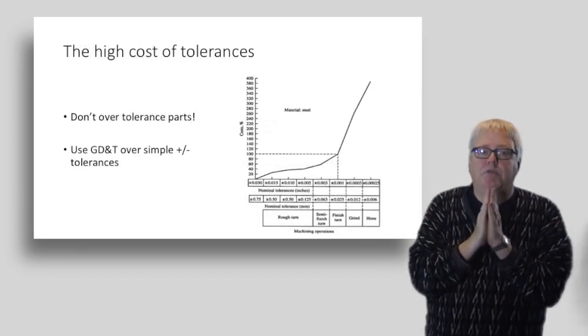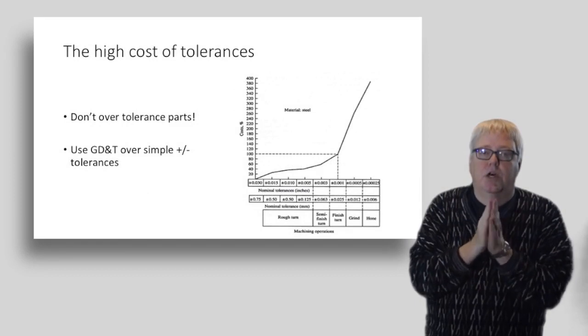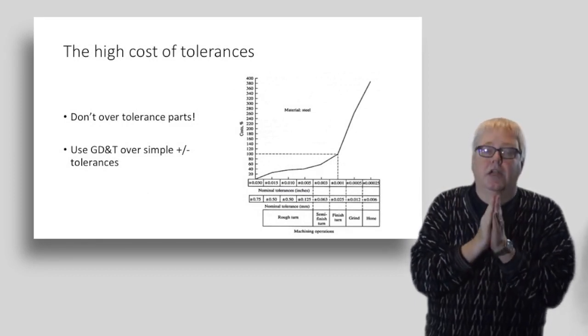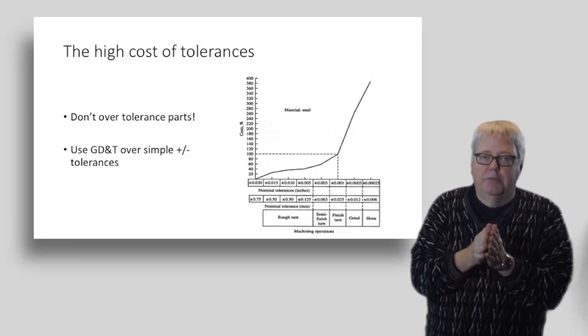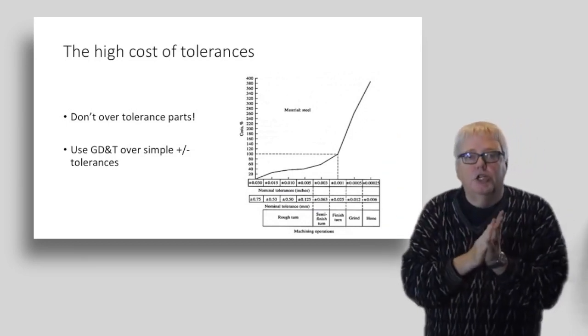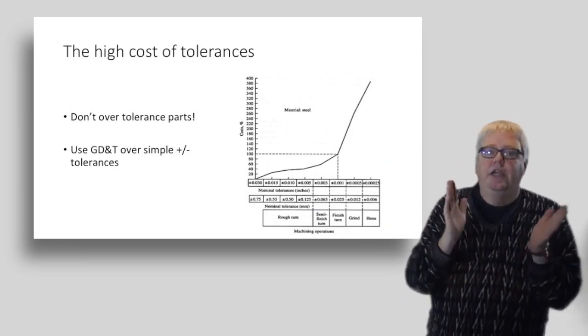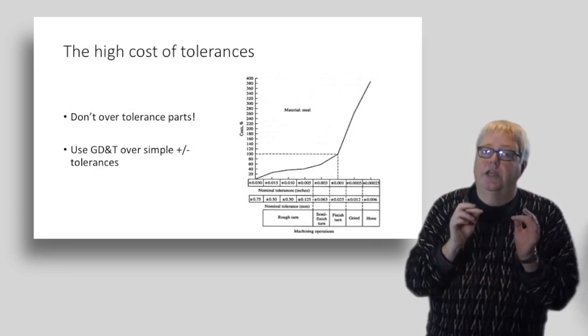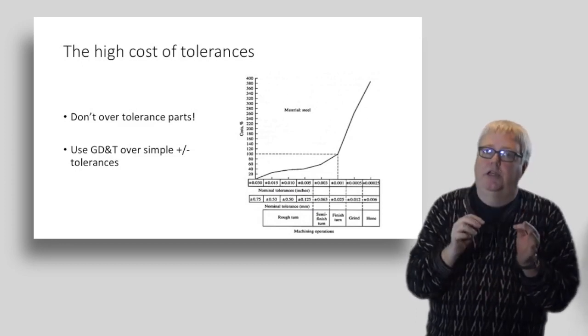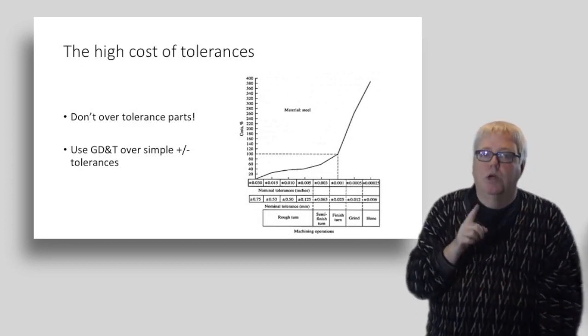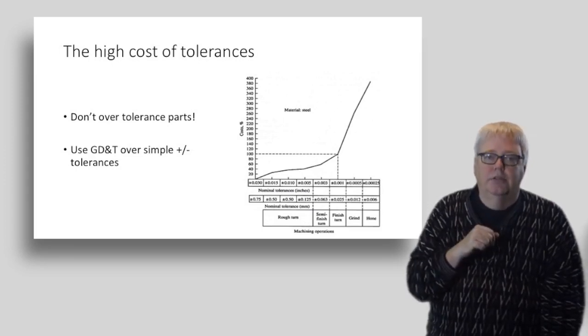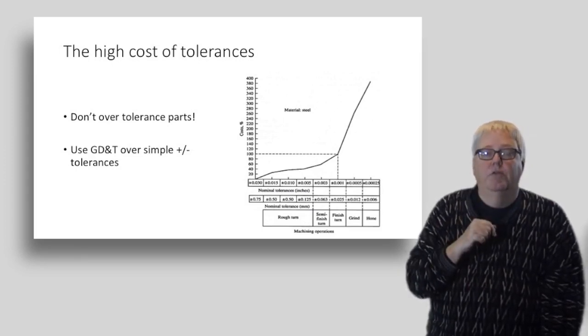I want to just take a moment to focus on the high cost of tolerances, because they drive a lot of cost in a product and a lot of headaches in manufacturing. As the chart on the right shows, with modern CNC, tolerances down to about a thousandth of an inch increase costs as they get tighter, but pretty slowly. Once your customer wants to go below a thousandth in tolerance though, the costs skyrocket. Here's another thing not everyone realizes.